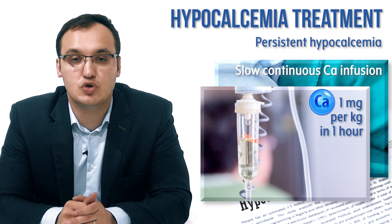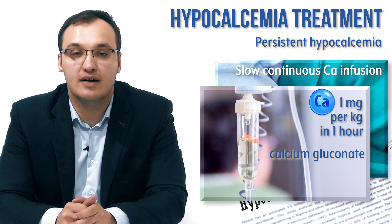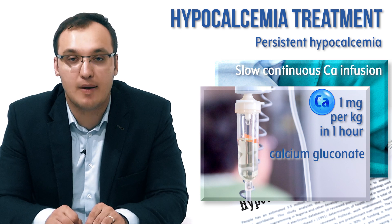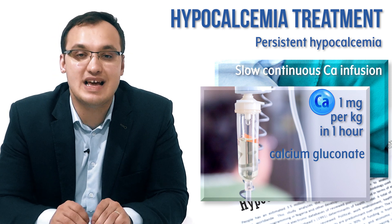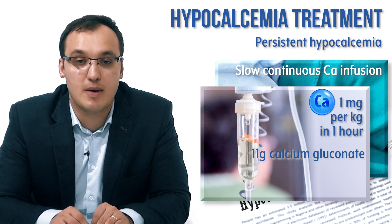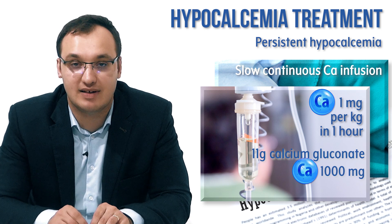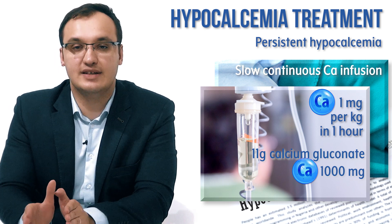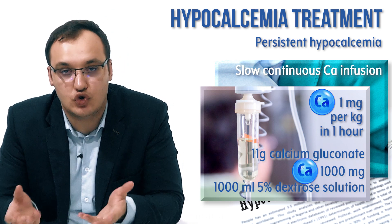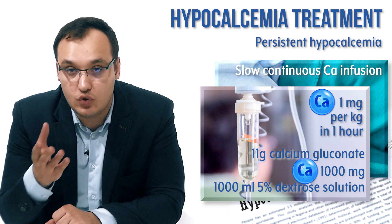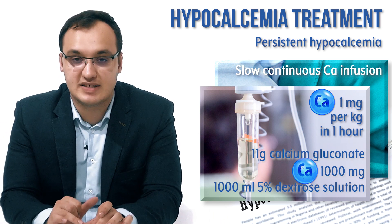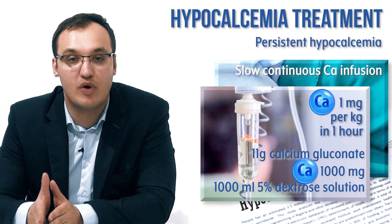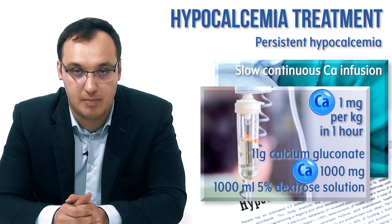How do we prepare the slow infusion? We put 11 grams of calcium gluconate — which as we said, 1,000 milligram of calcium gluconate contains 90 milligram of elemental calcium, so 11 grams contains 1,000 milligram of elemental calcium. We then put this 1,000 milligram of elemental calcium into 1,000 milliliter of 5% dextrose infusion solution. This gives us a concentration of 1 milligram of elemental calcium per milliliter.